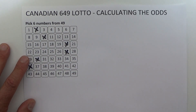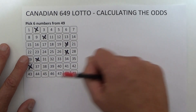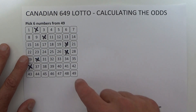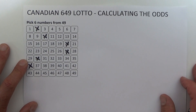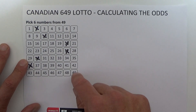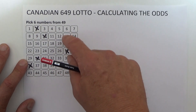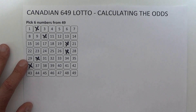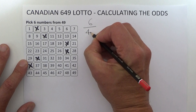When you're watching the draw, when the first number is drawn, you've got six chances from 49 of matching it, because there are 49 balls in the barrel and you have six numbers on your coupon. So that's six chances in 49 of matching the first number drawn.